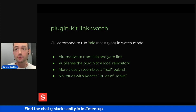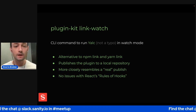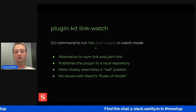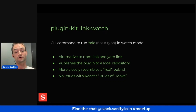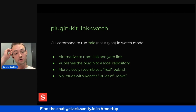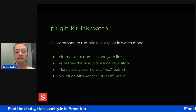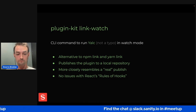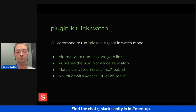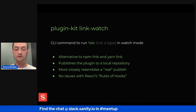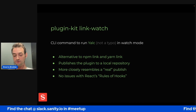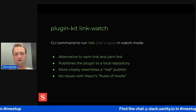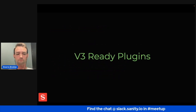The final command is plugin-kit link-watch. It's a wrapper around YALK — not YARN — that makes it easier to test React packages in the studio. It makes sure that rules of hooks are not broken because it installs an actual dependency rather than using npm link or yarn link.